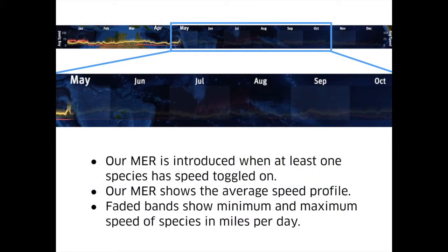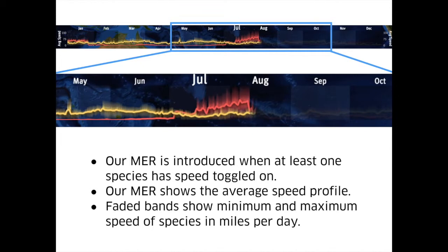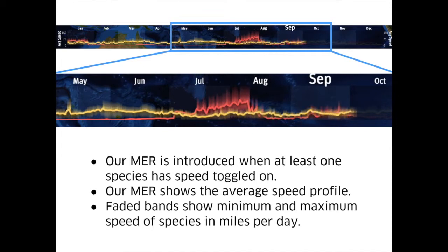Another aspect of our application is the timeline. The changing font size along with a progress line situate the users in time as months progress and loop. The faded banding represents the minimum and maximum speed across the individual animals of one species.